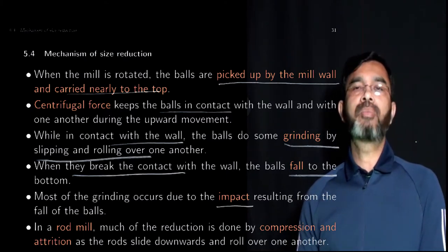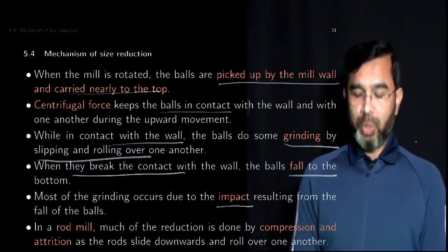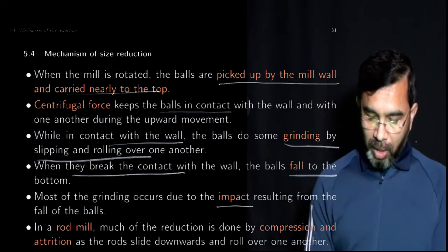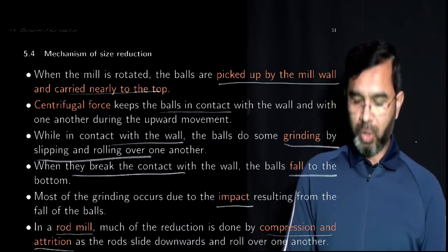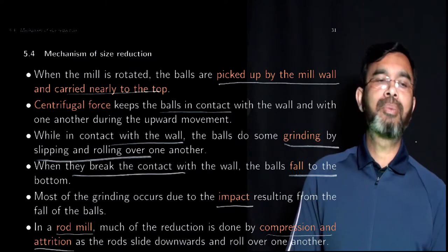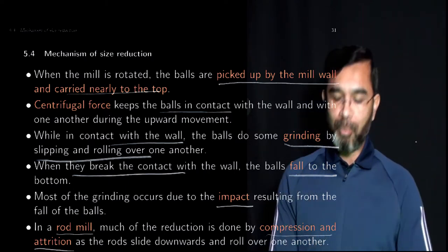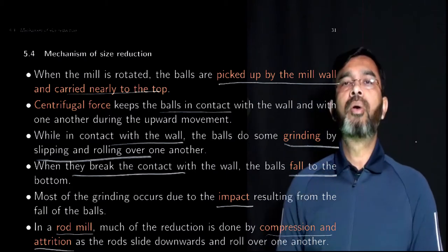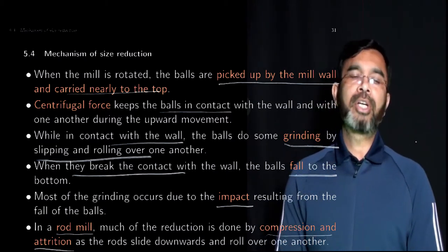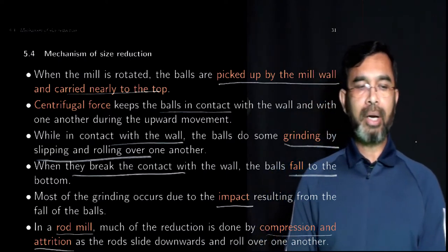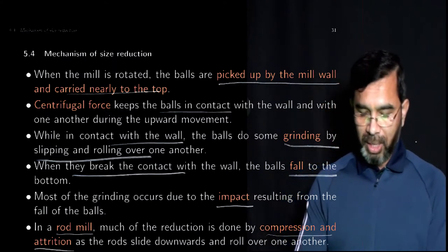You can think about why balls are used or rods are used. In a rod mill, typically compression and attrition take place. In the ball mill, if you use spherical balls, there is less compression and attrition force. If you use rods, there will be more compression and attrition force. If the mechanism required is more compression and attrition, then rod mills are preferred. When the impact force is enough to break the particles, then ball mills are preferred.